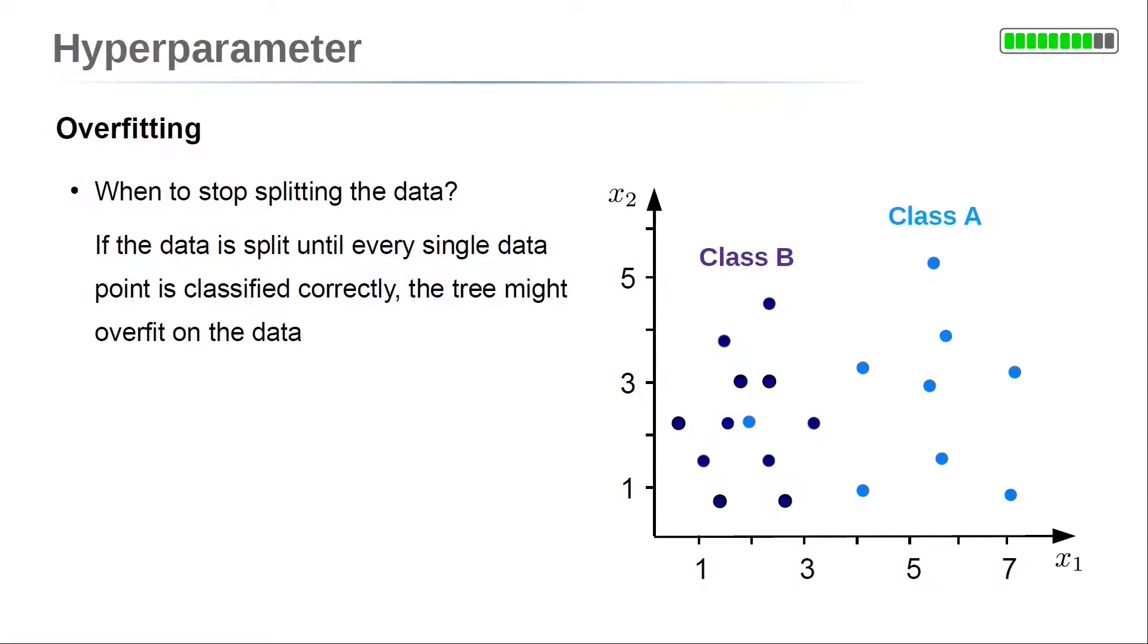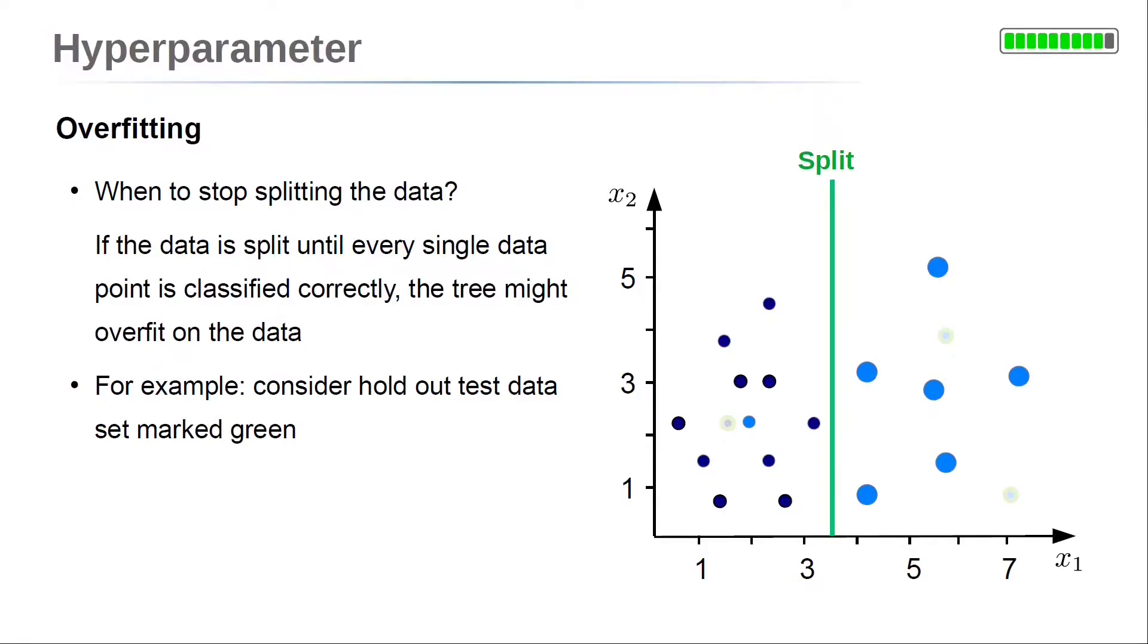Consider the example on the right side. The classification problem shown here has two different classes represented by the light blue and the dark blue dots. Three data points, encircled in green, are selected as test data. The rest is used as training data to build the decision tree. However, there is a single outlier, a single light blue dot among the dark blue dots.